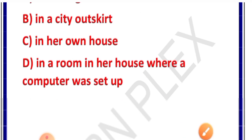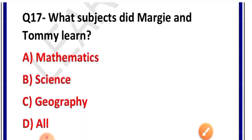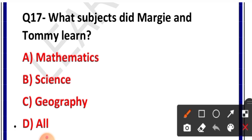Question number 17: What subjects did Margie and Tommy learn? Options: mathematics, science, geography, or all. Correct answer is option D — all. Margie and Tommy learned all subjects: mathematics, science, and geography.